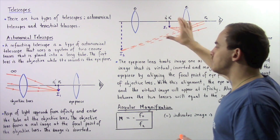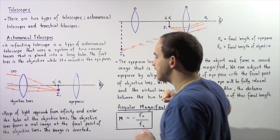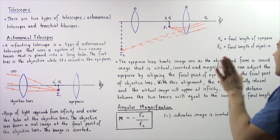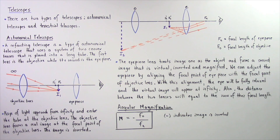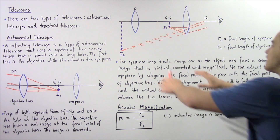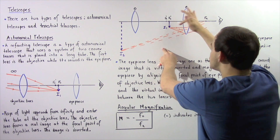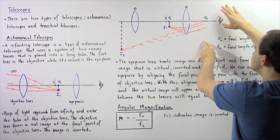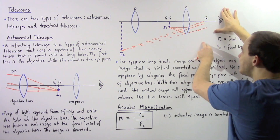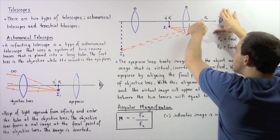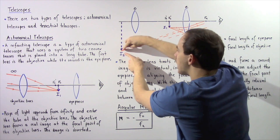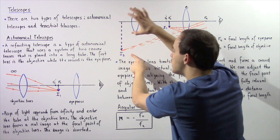The eyepiece lens treats image I1 as the object and forms a second image of that first image. That second image is virtual, inverted, and magnified. The rays of light refract and reach the eye of the person. What the eye sees is that these rays of light follow a straight path, and if we trace that straight path, they all converge at a point that forms our virtual image, image two.